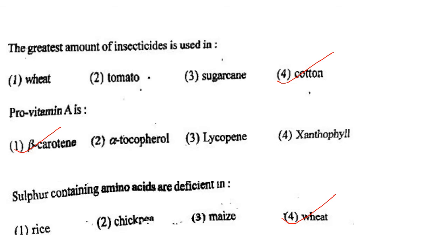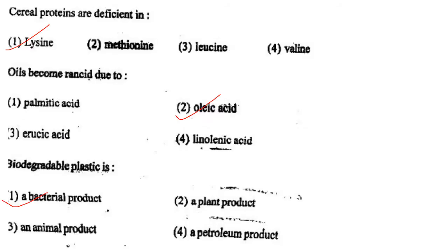Next one: Sulfur-containing amino acids are deficient in option 1, rice; option 2, chickpea; option 3, maize; option 4, wheat. Answer is option 4: wheat.